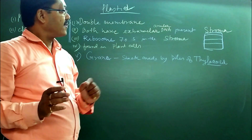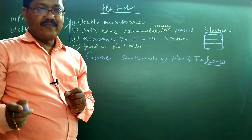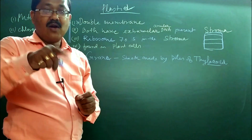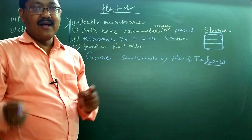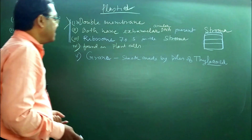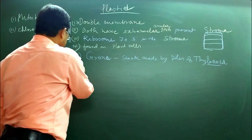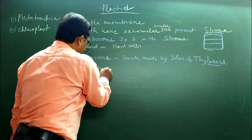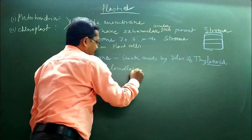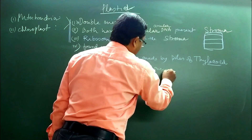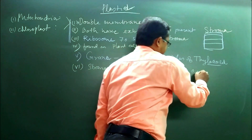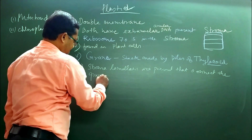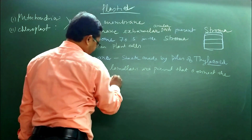The grana are connected with each other by membranous extensions called stroma lamellae, which connect one thylakoid of one granum to the thylakoid of another granum. Thylakoids are made by stroma, and stroma lamellae connect the grana with each other.